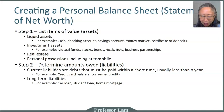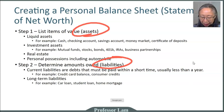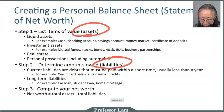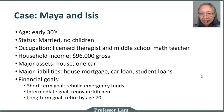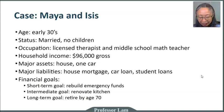Those are the two major steps: your assets and your liabilities. The last step is to compute your net worth, which is simply your assets minus your liabilities. To see how we create a personal statement of net worth, let's use a case study. We have a couple — Maya and Isis — and here is their personal information. Take one minute to look at this, and you may want to jot down the key data. Then we'll show you how to arrange this into a personal statement of net worth.